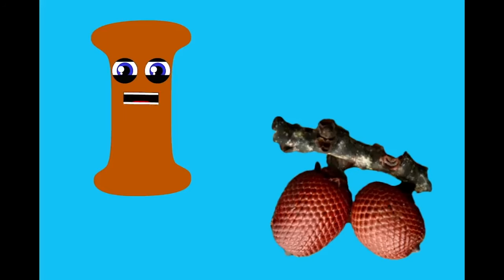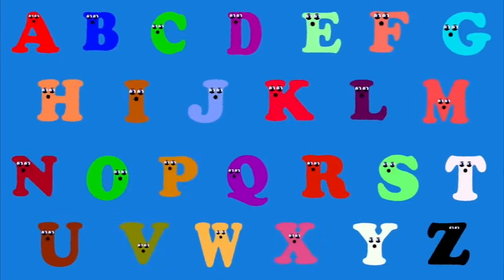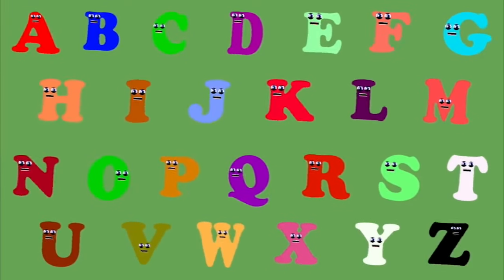E — it is the first letter of eggplant. F — it is the first letter of fig. G — it is the first letter of grape. H — it is the first letter of honeydew. I — it is the first letter of eggplant. J — it is the first letter of jackfruit. K — it is the first letter of kiwi. This is the fruit phonics song, so come and sing along. Eat your fruit every day and you will grow real strong.